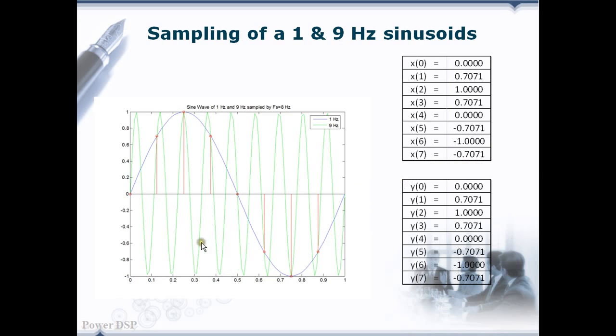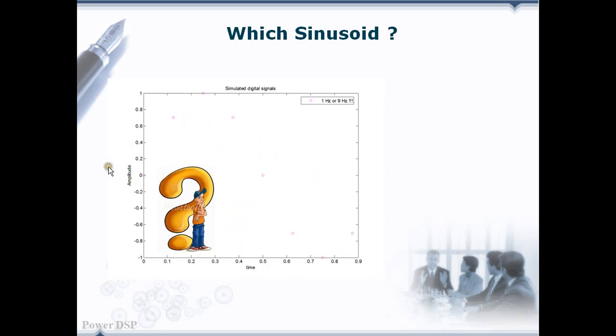We can visualize it by seeing the overlapping of the circle and cross in the figure here. And this is a big problem. Two signals are giving the same samples.